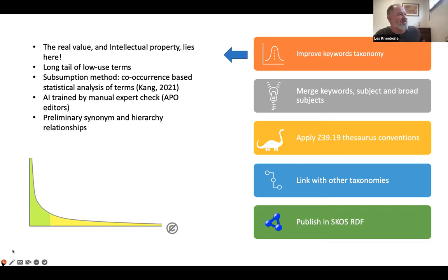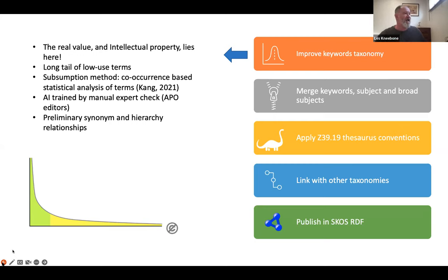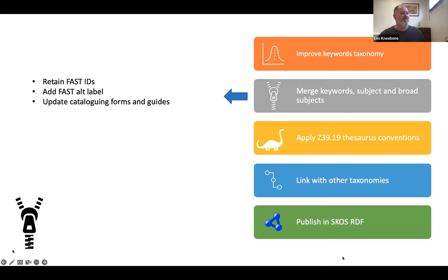The only problem with the keywords was that it had a very long tail of low-use terms - many terms used only once or twice. That's not surprising because synonyms were not being controlled, hierarchy was not being established, and the tools for looking up terms in the database were clunky, making it difficult to track duplications. I worked with data scientists at Swinburne - Yonbin Kang - who used a subsumption method, an AI approach to identify co-occurrence between terms. This was checked by APO editors, and helped me clean up the tail and find many synonyms.